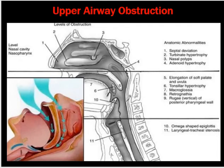Chronic repeated hypoxia leads to hemodynamic complications like pulmonary hypertension, systemic hypertension, coronary artery disease, CVA, and congestive cardiac failure. Obstruction can occur at different anatomical levels: the nose, oropharynx, and larynx. Nasal causes include septal deviation, turbinate hypertrophy, and nasal polyps. Oropharyngeal causes include elongated soft palate and uvula, tonsillar hypertrophy, and macroglossia. Laryngeal causes include omega-shaped epiglottis and laryngeal abnormalities.